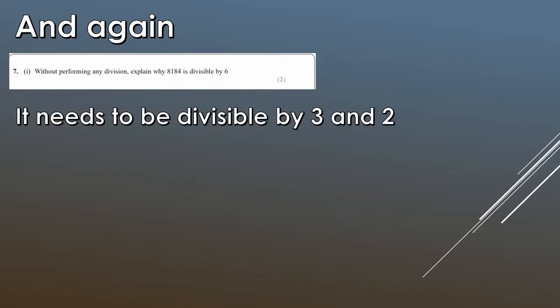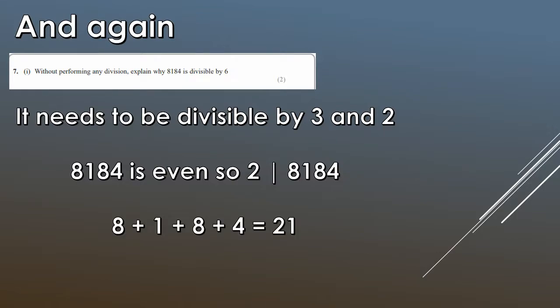And again, we'll have a look at another exam question. Without performing any division, explain why 8184 is divisible by 6. So we've already been told it's divisible by 6. So let's do the two rules for 6. First off, is our number even? Well, 8184, yeah, of course it's even. That's an even number, so it's divisible by 2. So 2 does divide 8184. What about 3? So if we add up the digits, 8 plus 1 plus 8 plus 4, well, that gives us 21. So does 3 divide 21? Yeah, of course, 7 times 3 is 21, using the definition of divisibility. So therefore, 6 does divide 8184.